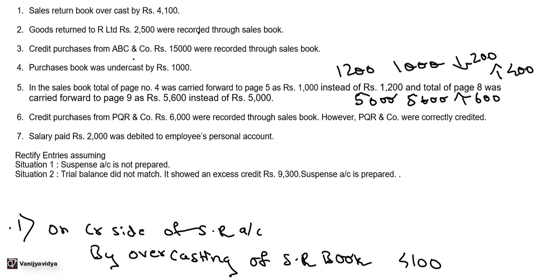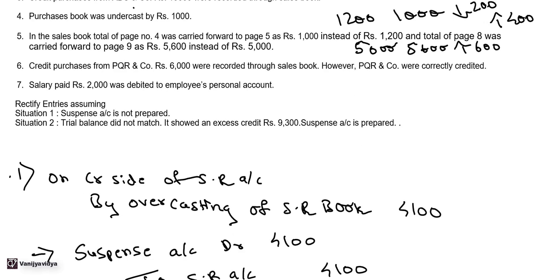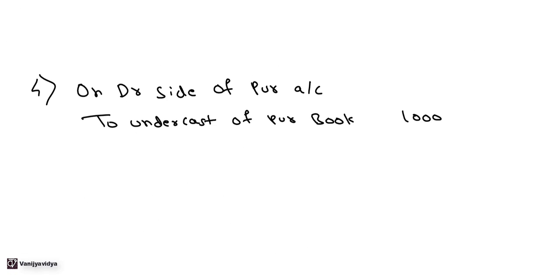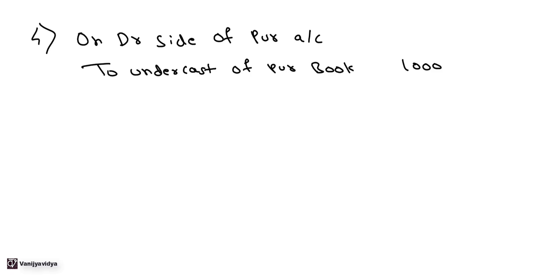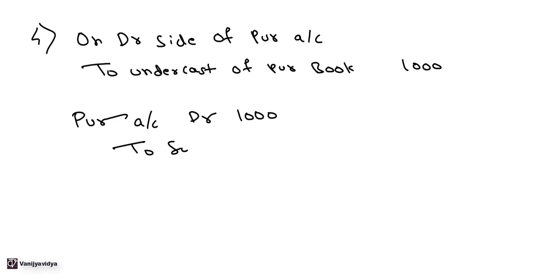Fourth transaction: purchases book undercast by Rs. 1,000. This is a one-sided error — the purchase account was showing a balance of Rs. 1,000 less, causing a difference in the trial balance. In Situation 2, when we prepare a suspense account, the entry is: Purchase Account Debit Rs. 1,000 to Suspense Account Rs. 1,000.